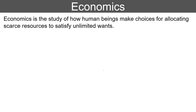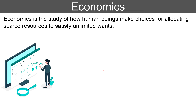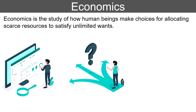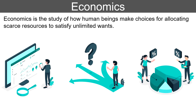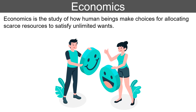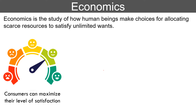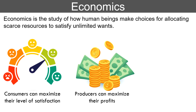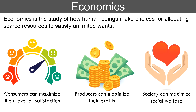Before understanding our main topic, first let us know what is economics. Economics is the study of the way in which human beings make choices for the allocation of scarce resources in order to satisfy unlimited human wants. Hence, the consumers can maximize their satisfaction level, producers can maximize their profits, and society can maximize its social welfare.